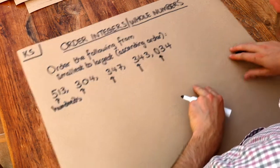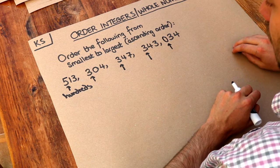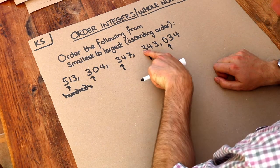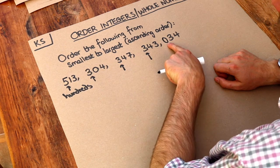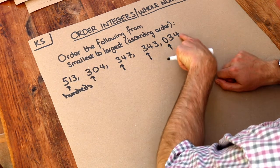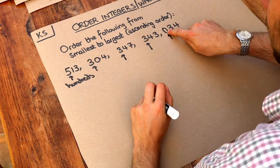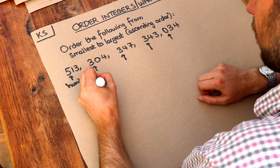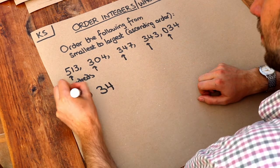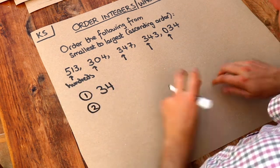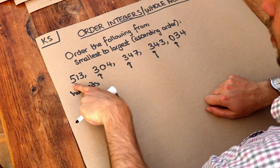So when we want to compare these, we first look at the hundreds digit. We can see hundreds digits of zero, three, three, three, and five. Zero is the smallest, so that number — 34 — is going to be first in our ordered list.